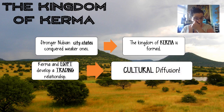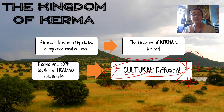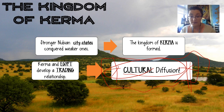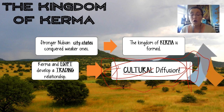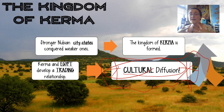Kerma and Egypt developed a trading relationship, and this led to something called cultural diffusion. This is a super important term — star it, circle it, box it in. Cultural diffusion is when two or more cultures come together and blend to create something new. In this case, we have people from the Nubian region of Kerma and Egypt bringing their food and ideas together and creating something new.